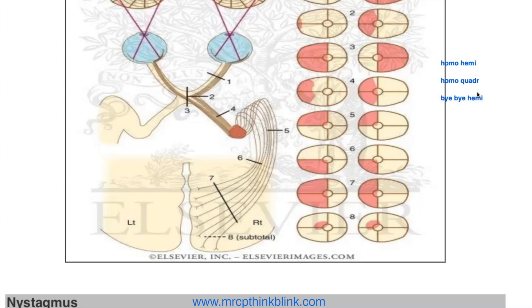Let's start with the first clue: homonymous hemianopia. I'll change the color to blue so you can see clearly. If you look at lesion numbers four, seven, and eight — these four, seven, eight represent our homonymous hemianopia. 'Homo' means on the same side.